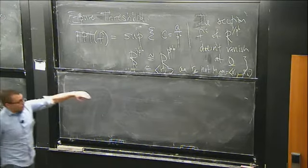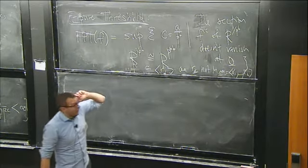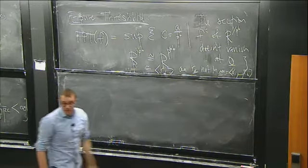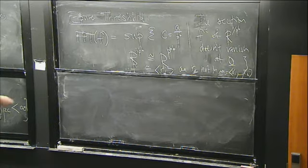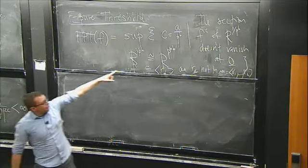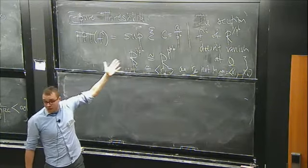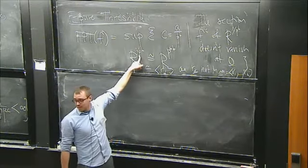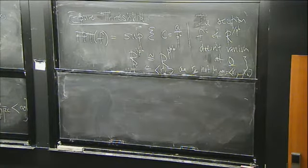We need that some one of these component functions is not in the maximal ideal of functions vanishing at the origin. The supremum is over all rational numbers of the form a/p^b such that this section f^c does not vanish as a section of this vector bundle at the origin. Of course, you can translate this to whatever point in affine space you prefer by switching to the maximal ideal corresponding to that point.